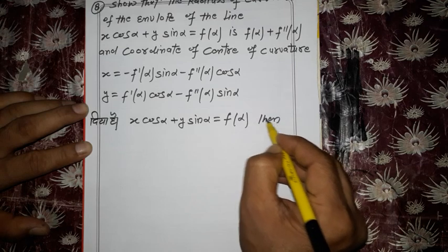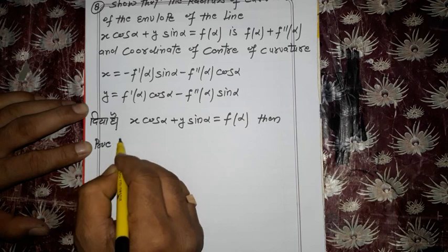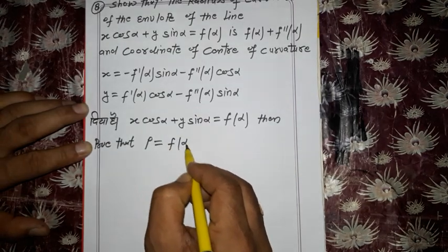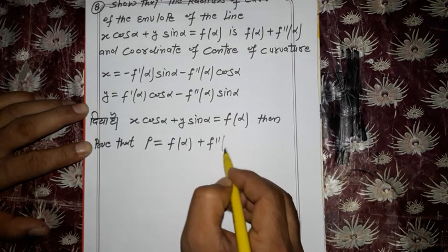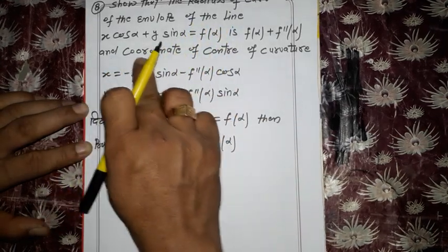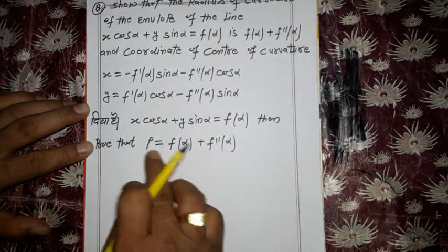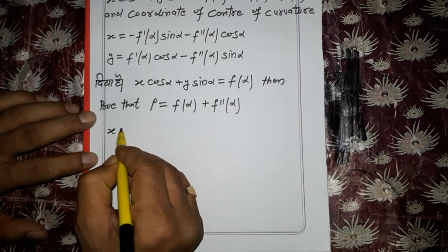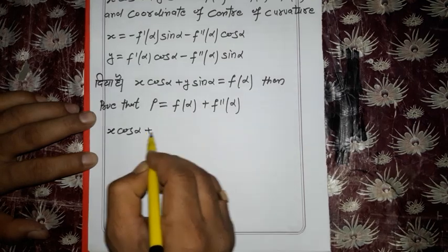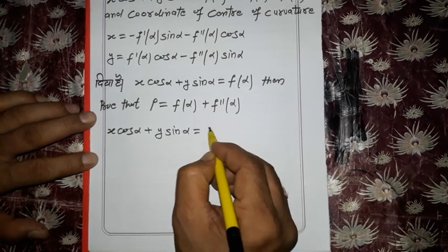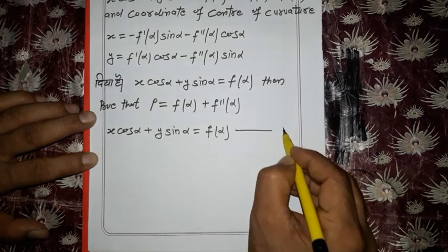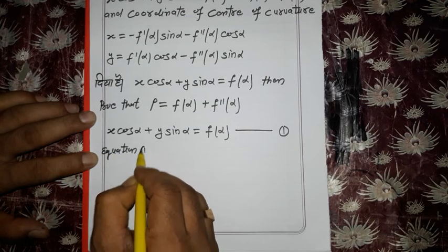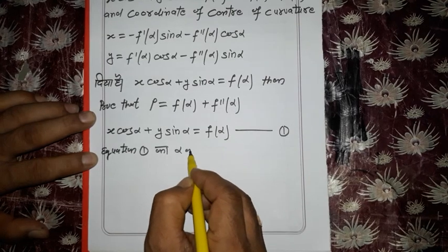We need to prove the radius of curvature equals f(α) + f''(α). After that I will talk about the coordinates of the center of curvature. First, I need to find ρ. The given equation x cos α + y sin α = f(α) is labeled equation number 1. Now I differentiate equation 1 with respect to α, because α is the parameter.